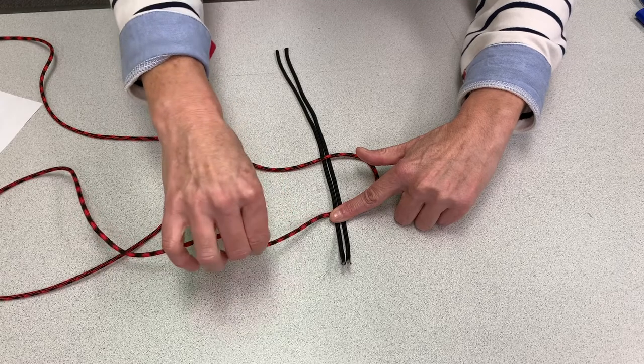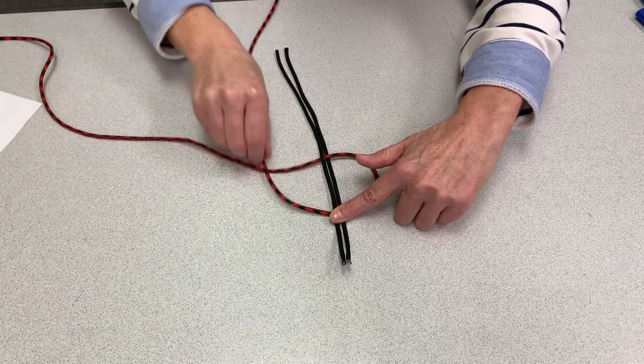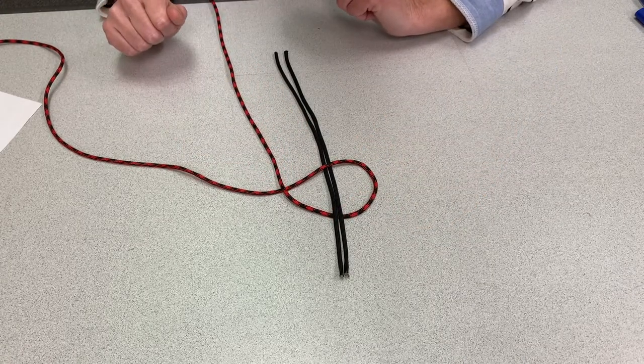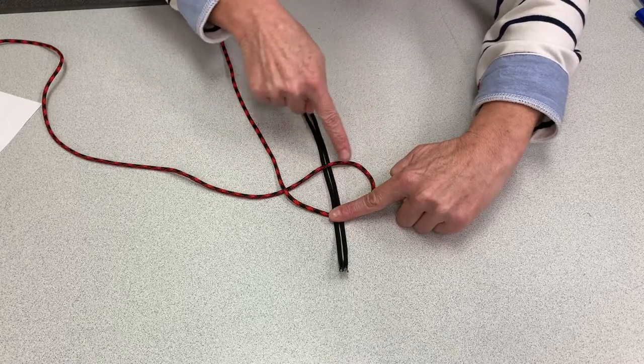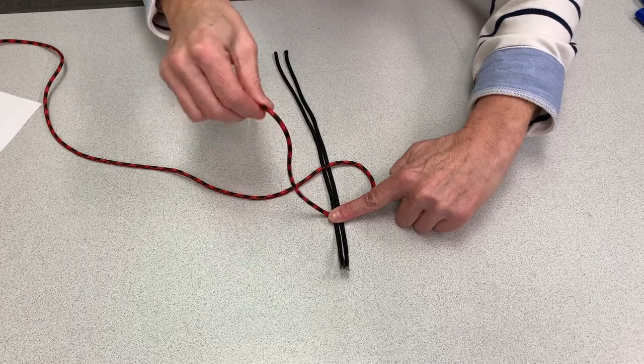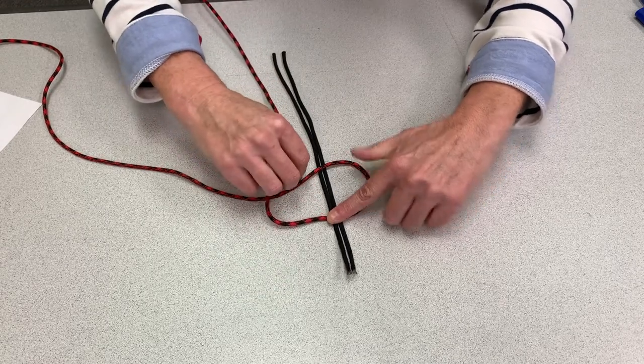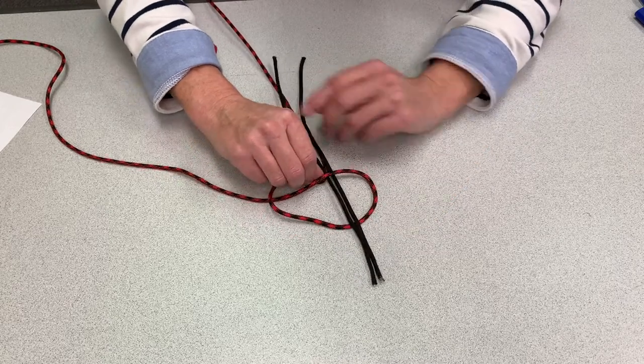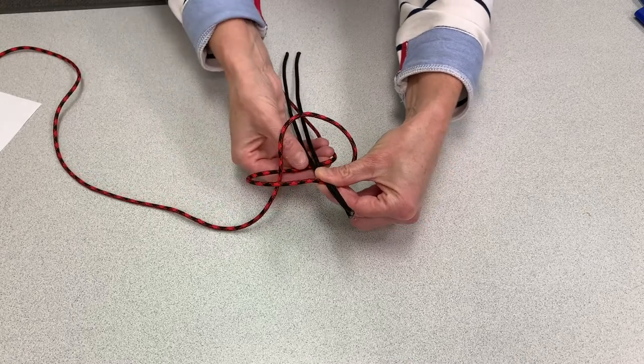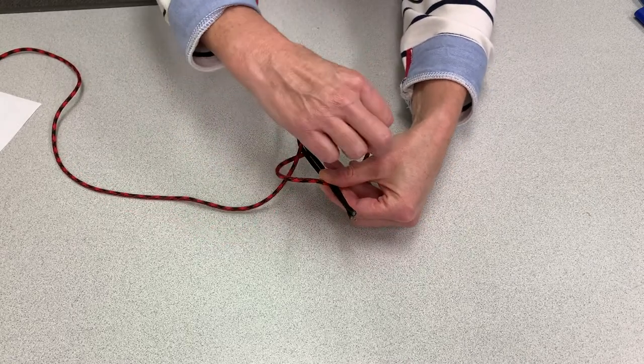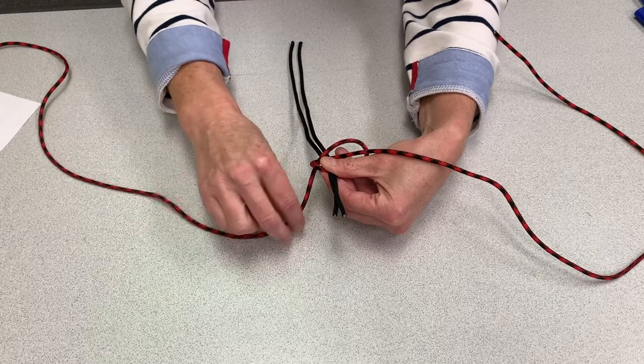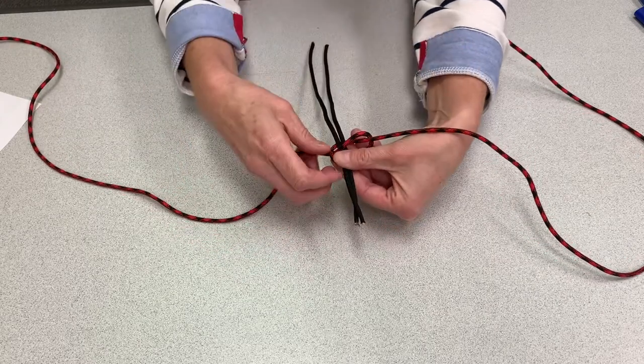I'm going to take the cord on the right-hand side and bring it down over the one I just brought over. So it comes around underneath. I'm going to take this cord that is laying on top and bring it underneath everything. I have to pick this up. I'm going to pinch it into place. I'm bringing this cord underneath into this loop here. And I'm going to tighten this into a knot.